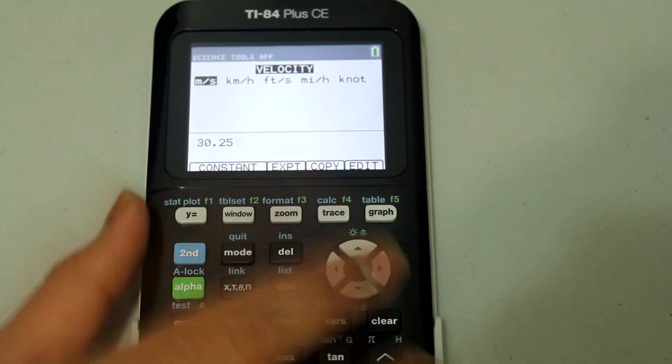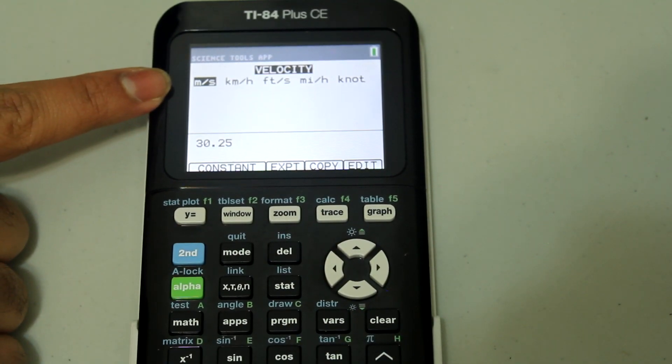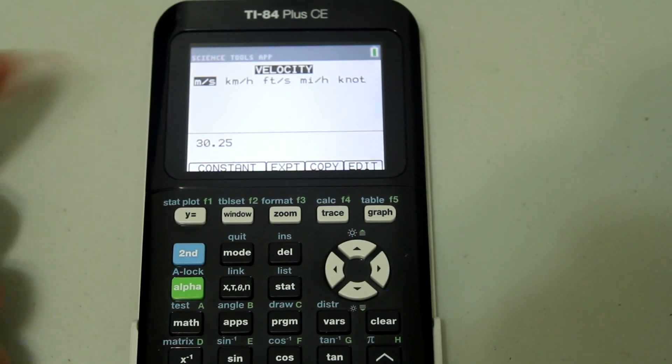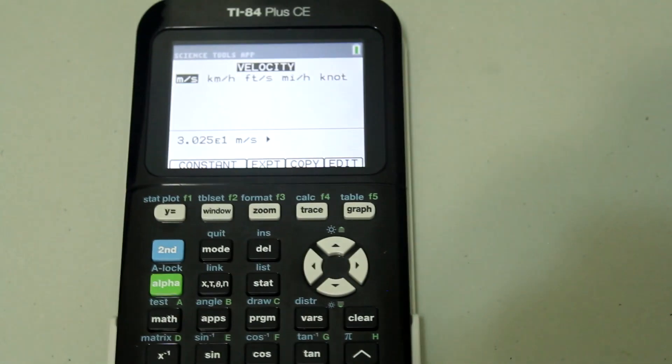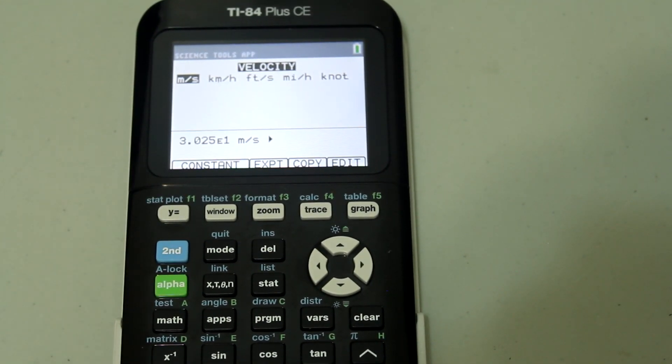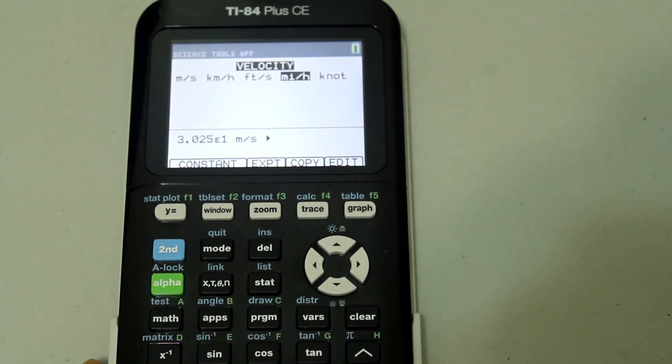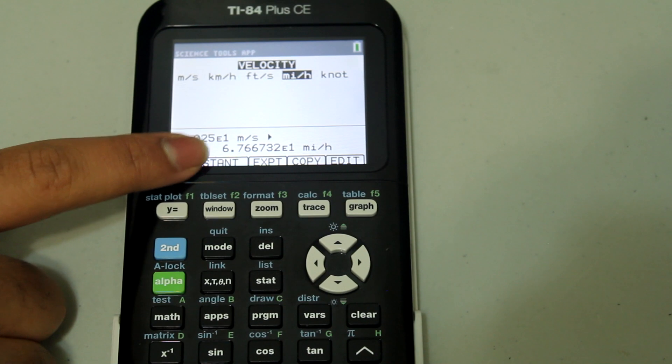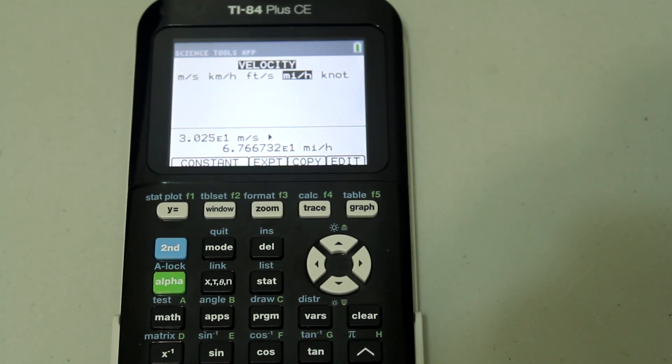If you're interested in a different one, you can easily scroll left and right, but we're interested in meters per second. So afterwards, just hit enter and then you see that meters per second pops up right next to the quantity. Scroll to miles per hour and hit enter and now you see that the answer appears in miles per hour.